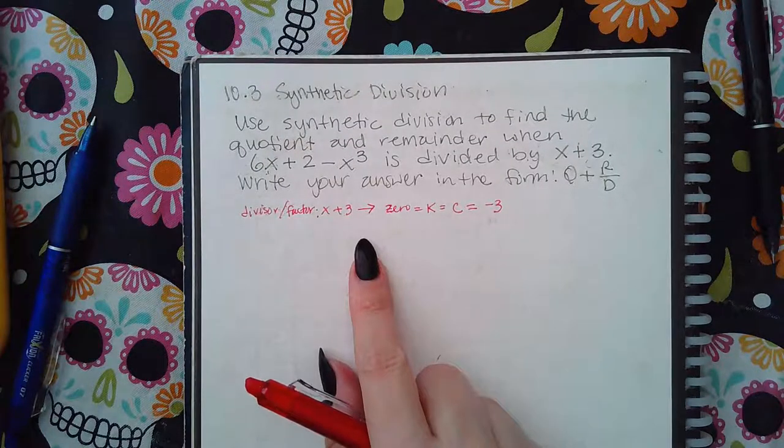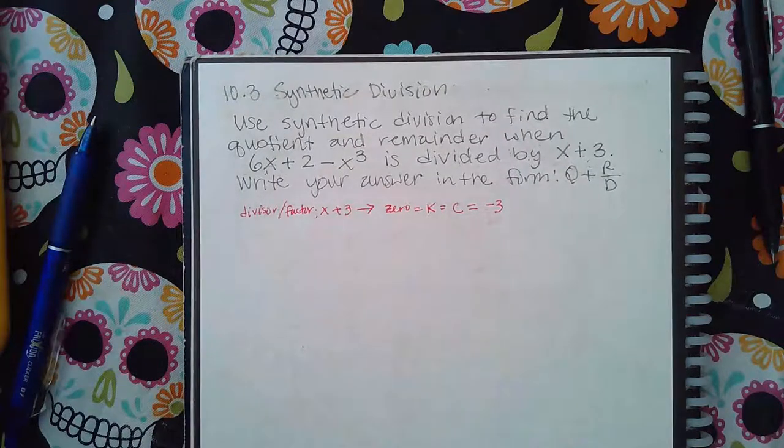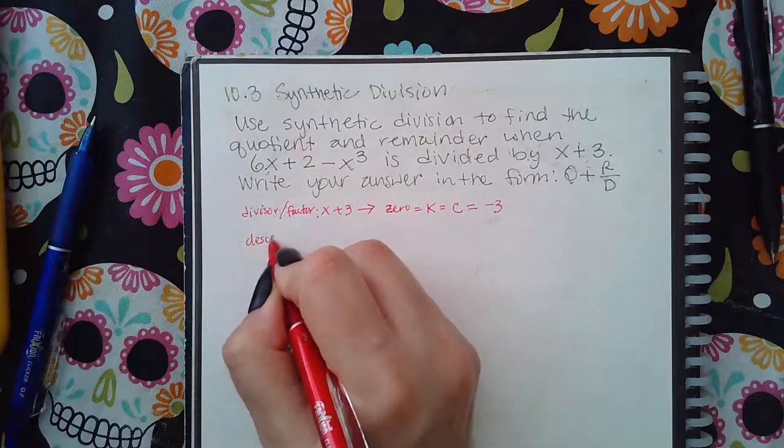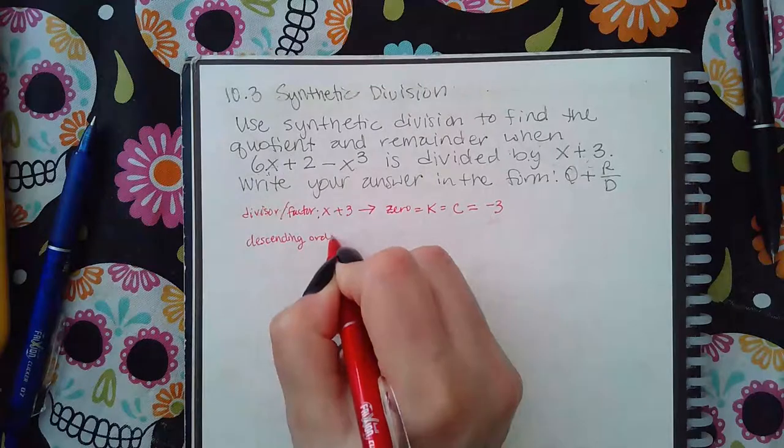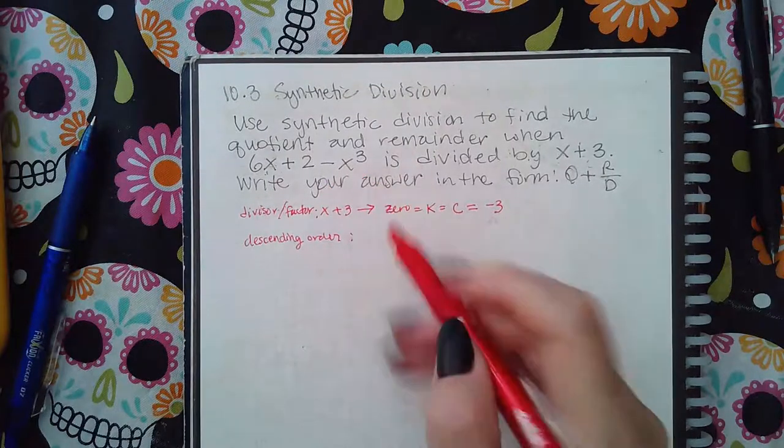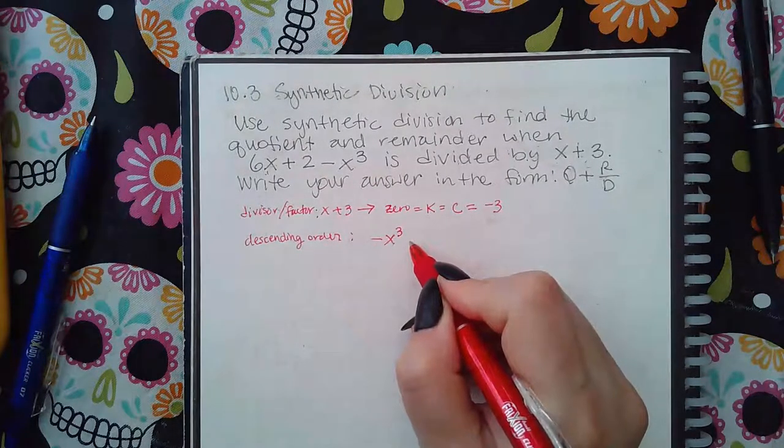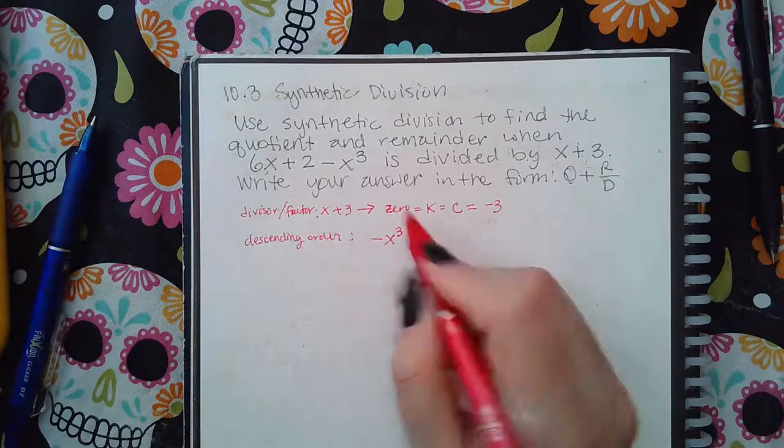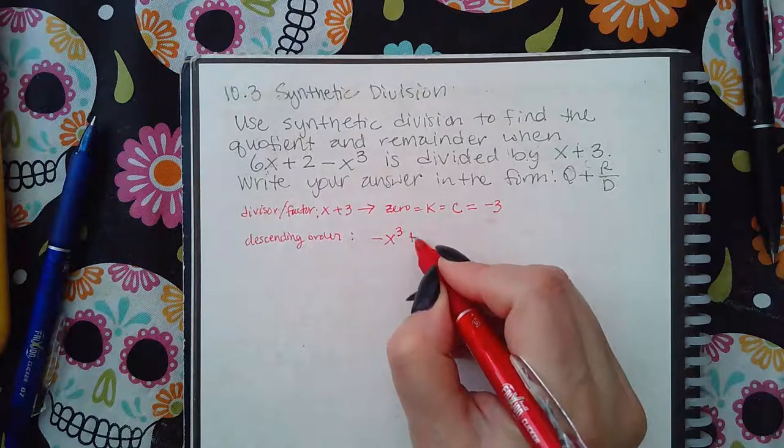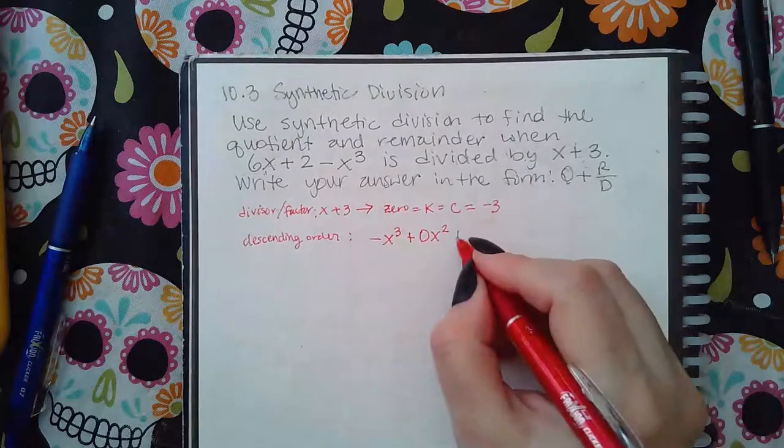Now, the rest of the function, this here, I have to have it in descending order, which means I need to start with the variable with the highest exponent first. So this term has to come next. Then I would have to put the term with the squares in it.